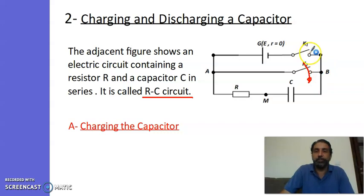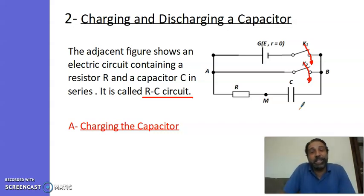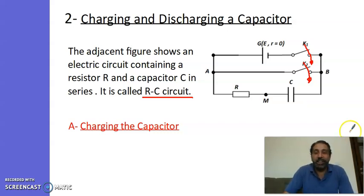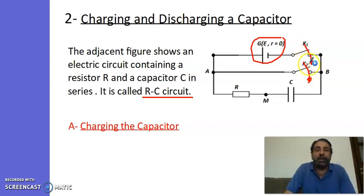Now if we close both K1 and K2 at the same time, the ideal battery would explode. Why? Because we have a short circuit — here is the battery and here is the connecting wire, you have shorted the circuit. So we do not close K1 and K2 at the same time.